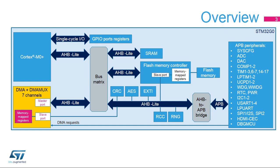The Direct Memory Access embedded in the STM32G0 microcontrollers is used to provide high-speed data transfers between peripherals and memory, and between memory and memory. Data can be quickly moved by the DMA without any CPU action, which keeps CPU resources free for other operations.